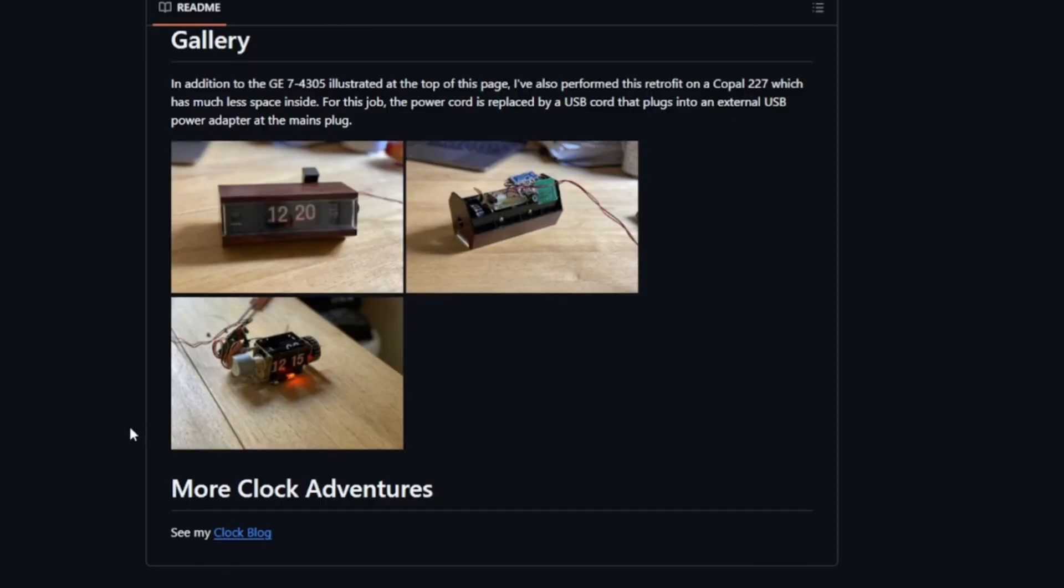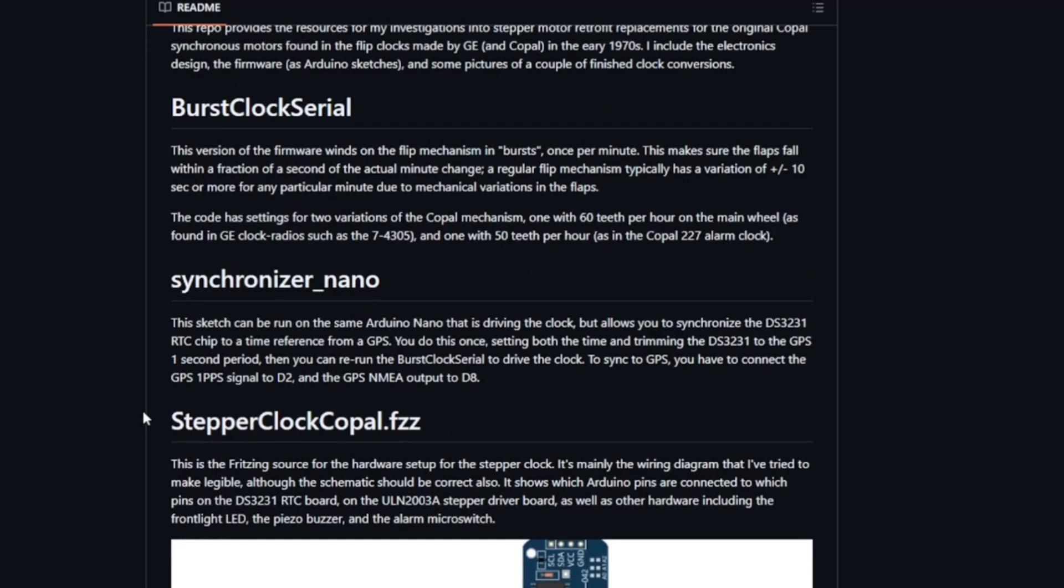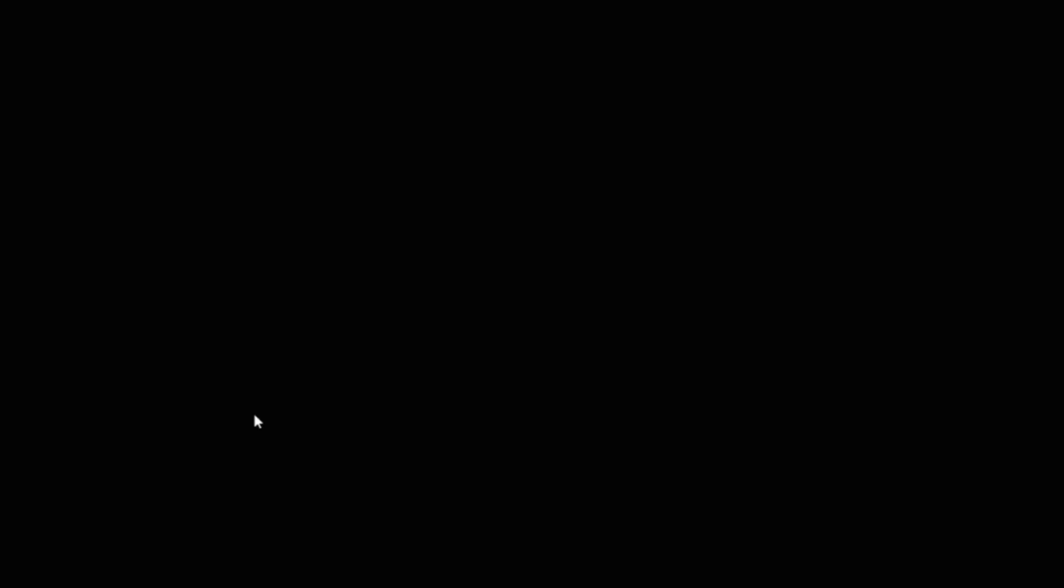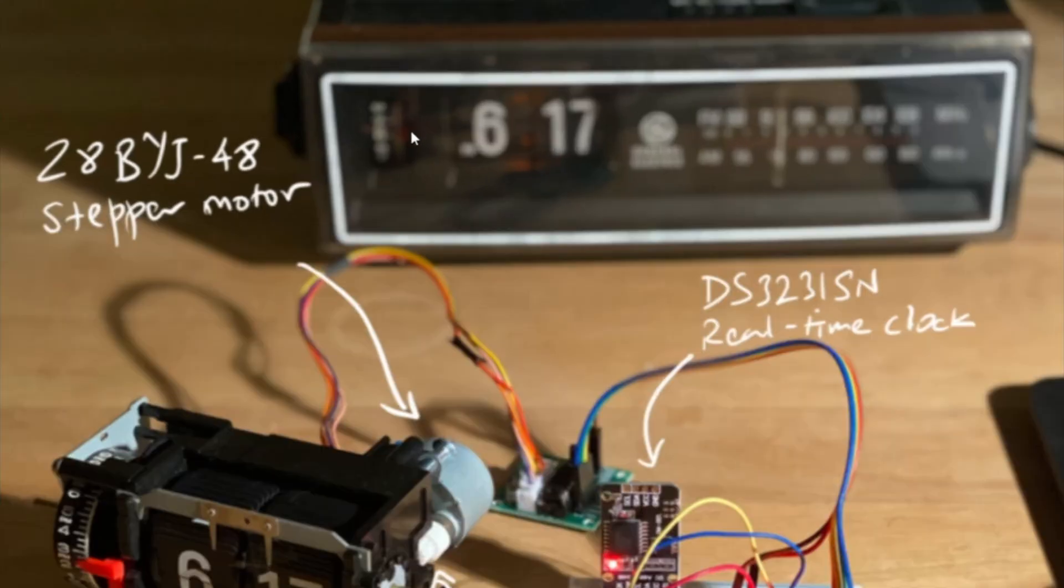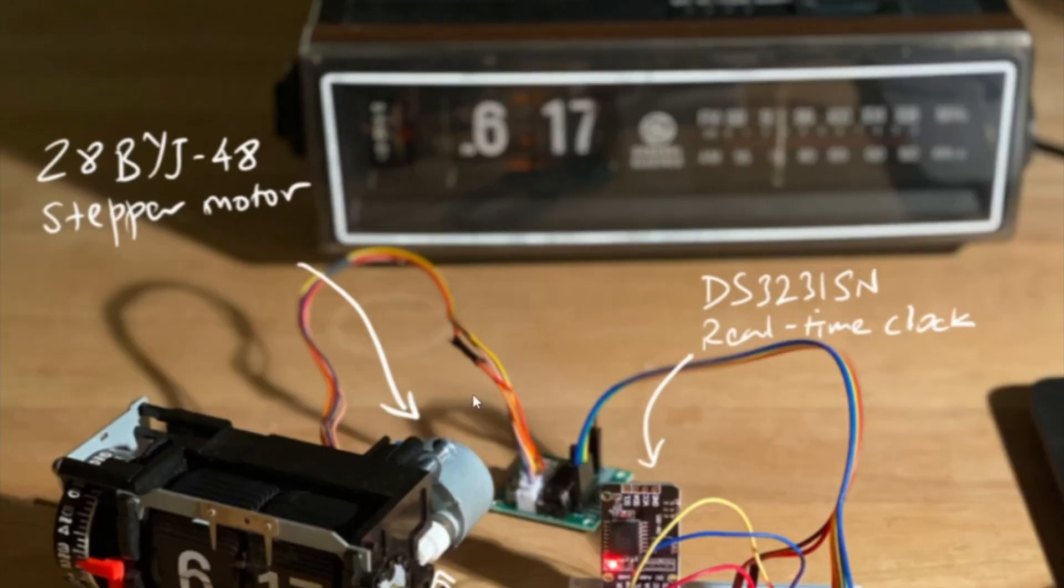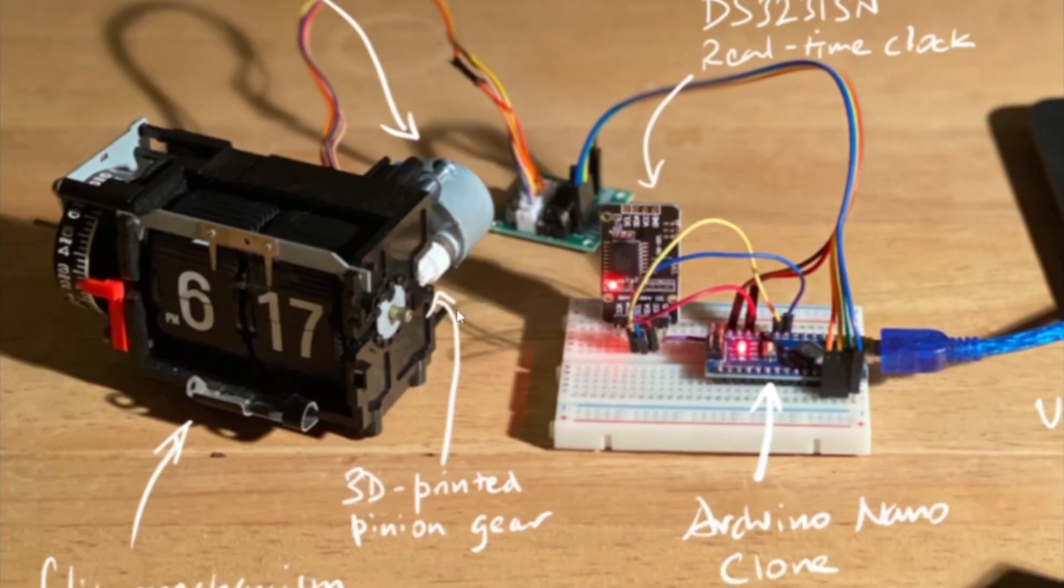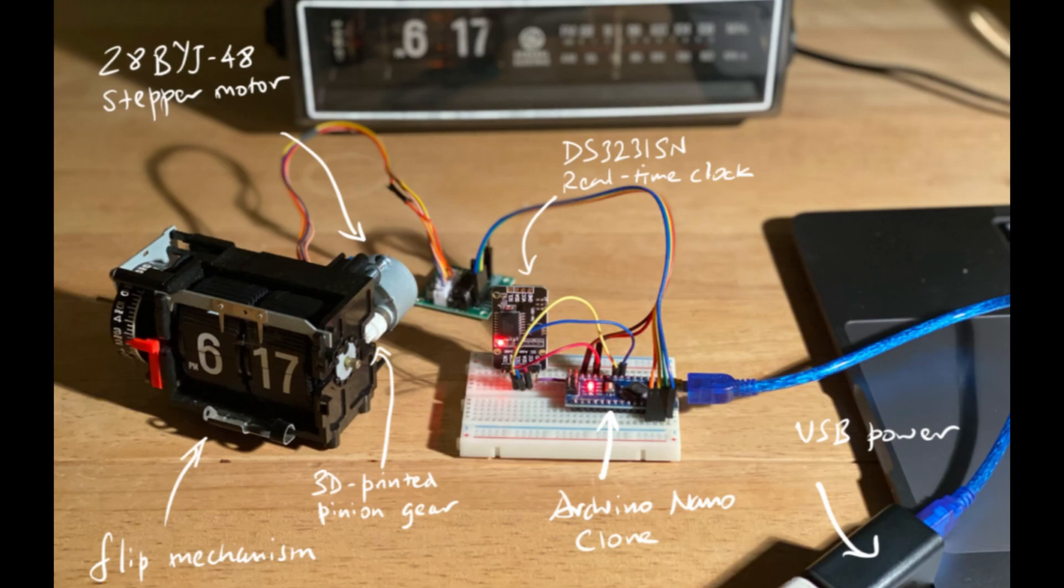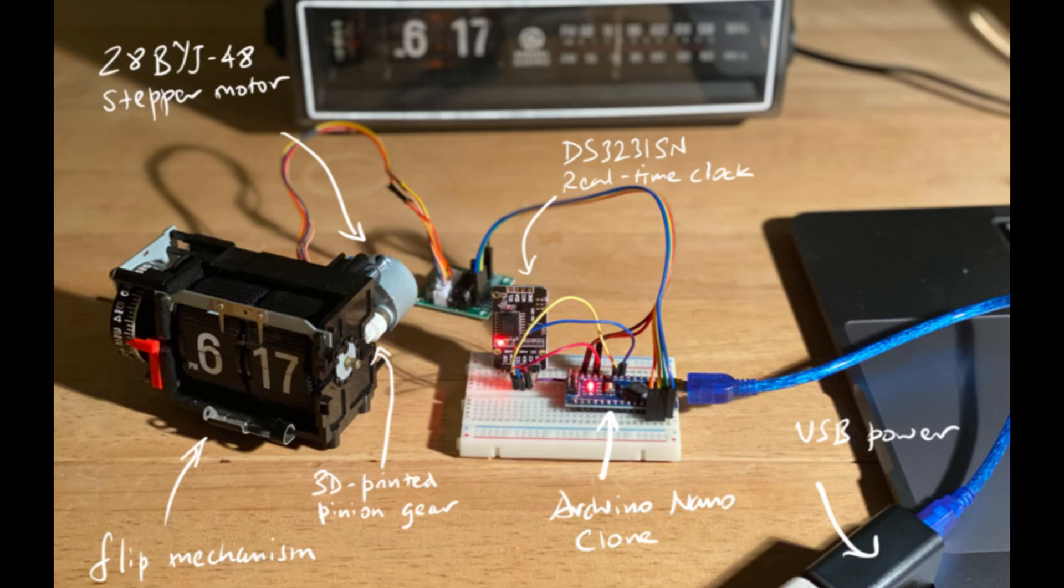Luckily, I stumbled across a YouTube video that showed how to take it apart. I found this GitHub link where somebody actually retrofitted the typical Arduino stepper motors to work on the flip clock mechanism literally on the same clock that I have in this video. It also includes a 3D printed pinion as well as an Arduino nano circuit which, to be frank, I did not want to deal with and was hoping that I could just repair the motor.